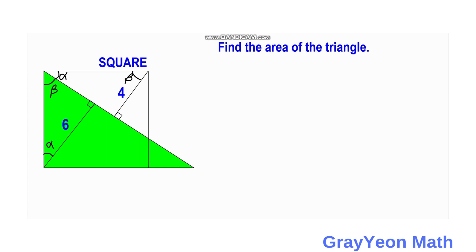Notice that these two right triangles — the unshaded one and the shaded one — both have the hypotenuse equal to the side of the square. Let us label the side of the square as s. By the Angle-Side-Angle theorem, we can see that these two triangles are congruent, since they have two complementary angles and the side in between them — the side of the square — are congruent.